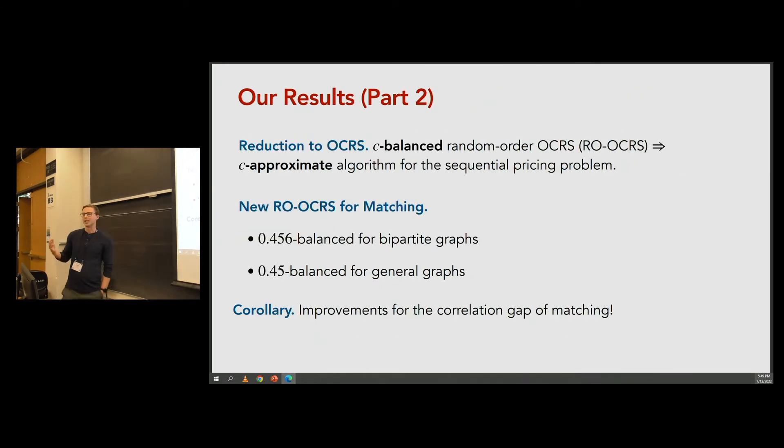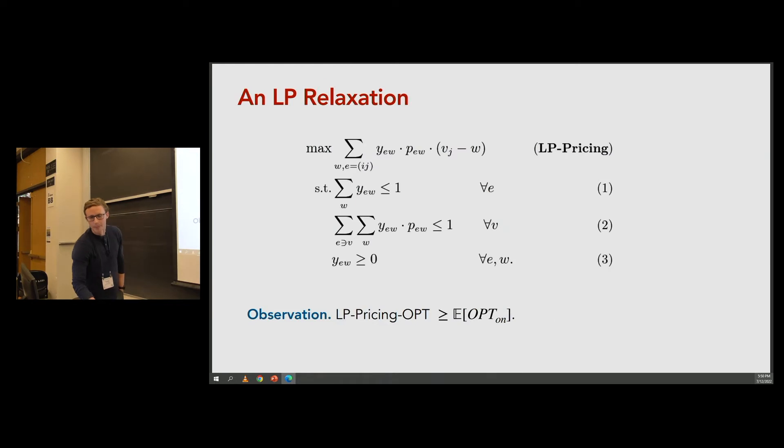Now I can state the second part of our results. We actually reduced the design of an approximation algorithm for the sequential pricing problem to the design of a random order OCRS for matching, which I'm going to denote by RO-OCRS for this talk. And then we gave improved random order OCRSs for matching. In particular, we showed that you can achieve a 0.456 balanced OCRS for bipartite graphs and a 0.45 balanced OCRS for general graphs. And actually, as a corollary, at least for general graphs, it's an improvement on the correlation gap of matching, which is despite applying to a more restrictive setting.